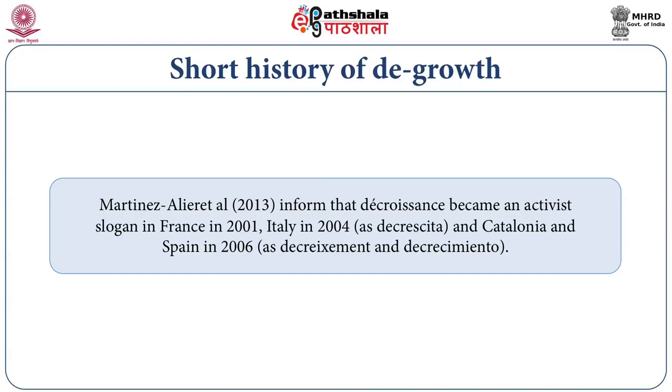During a conference in Montreal in 1982 entitled Challenges of Degrowth, the French term was used to signify economic recession. The De Croissance social movement originated in Lyon, France in 2001 and spread to other parts of Europe thanks to degrowth conferences held in France, Barcelona, Montreal and Venice between 2008 and 2012, and a series of international publications. The English term degrowth was accepted at the first degrowth conference in Paris in 2008. Martinez Ellier and others inform that De Croissance became an activist slogan in France in 2001, in Italy in 2004, and in Catalonia and Spain in 2006.